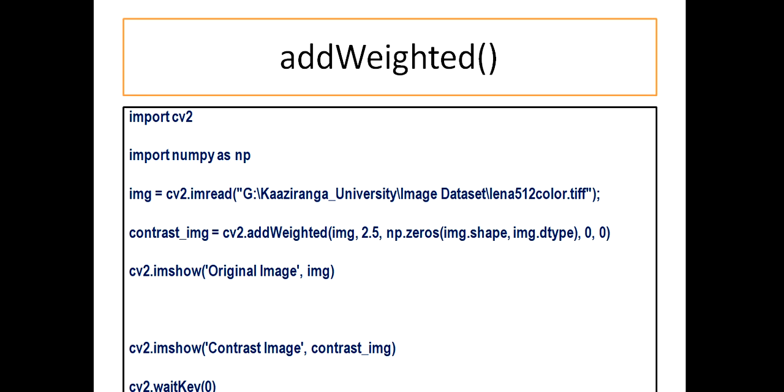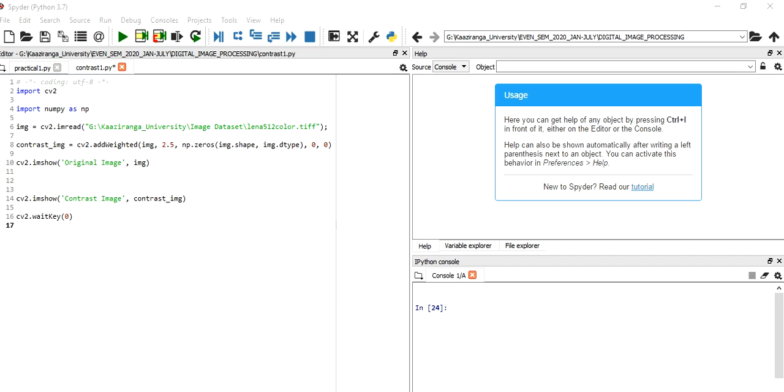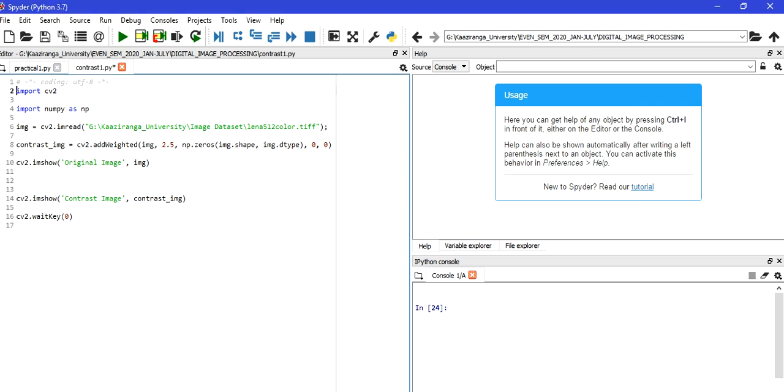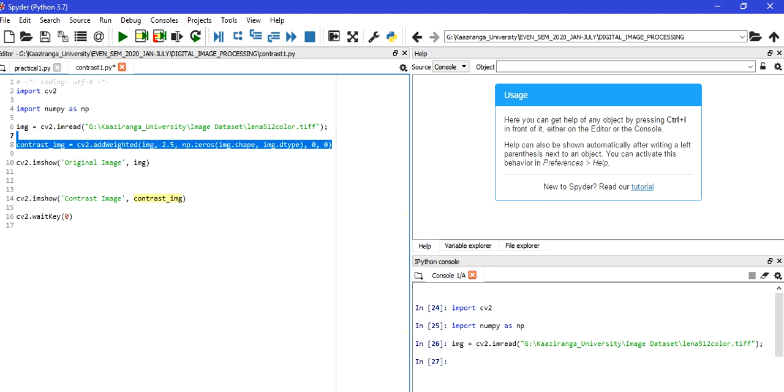So let's open the Spider IDE and perform the experiment. This is your Spider. One by one, users type the commands. I am executing one by one. Import cv2, execute it. You will see in the console part. Then next statement, import numpy, numpy imported. Then original image taken and saved in img. Then contrast_img, this is the very equation we are talking about. Let's execute this equation. It's executed successfully without any error.